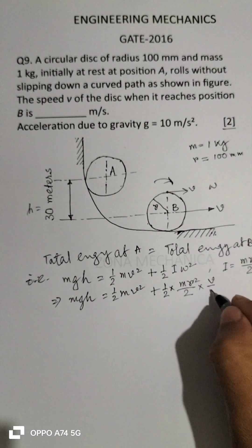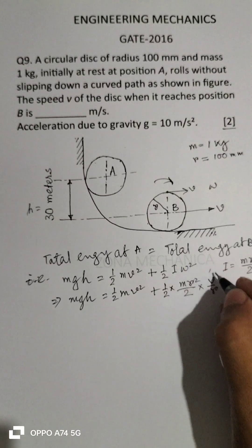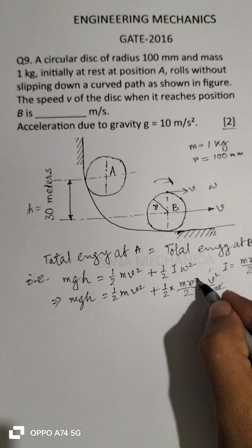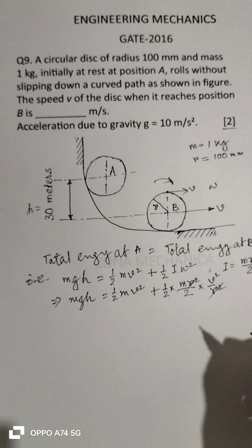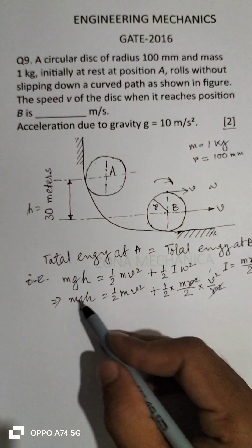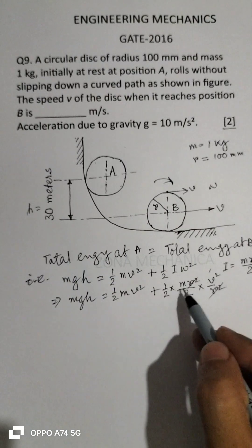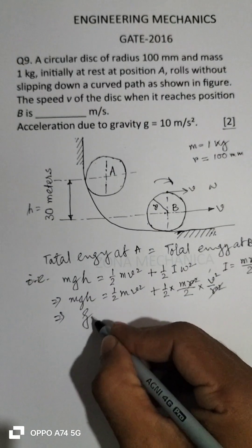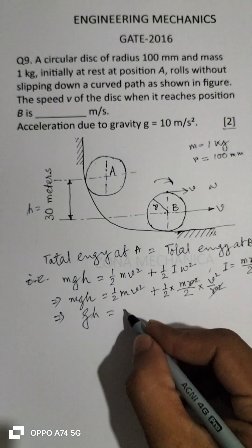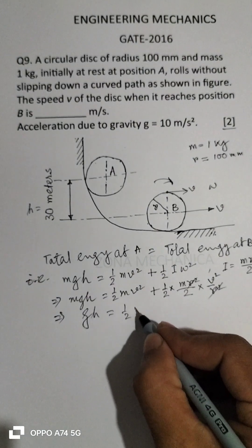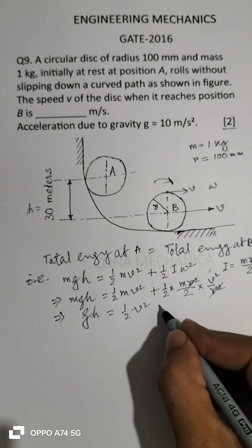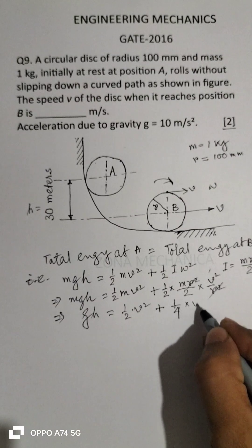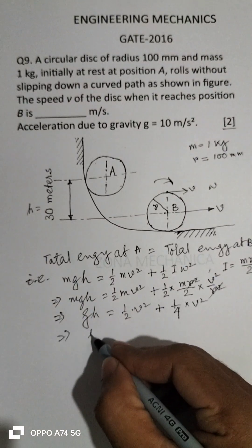Since square is there, squaring it, now this r² gets cancelled, and m will get cancelled from both sides. So we will have gh = ½v² + ¼v².